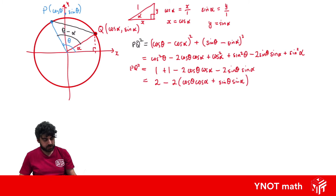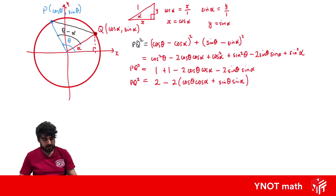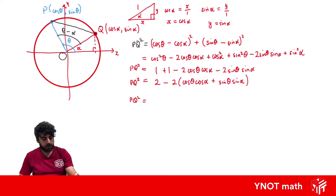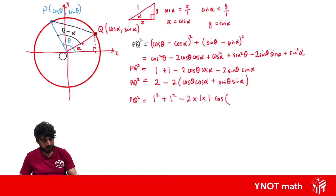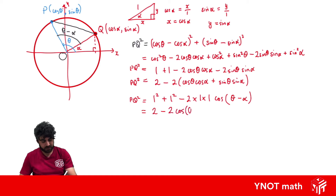We can also write another expression for PQ squared using the cosine rule. Calling the origin O, PQ² equals OQ² plus OP² minus 2·OQ·OP·cos(angle at center). Since OQ and OP are both radii equal to 1, and the angle at the center is theta minus alpha, we get PQ² equals 1 + 1 minus 2·cos(θ − α), which simplifies to 2 minus 2 cos(θ − α).